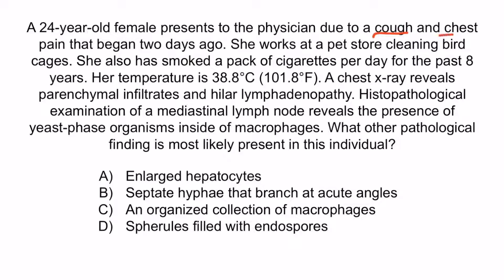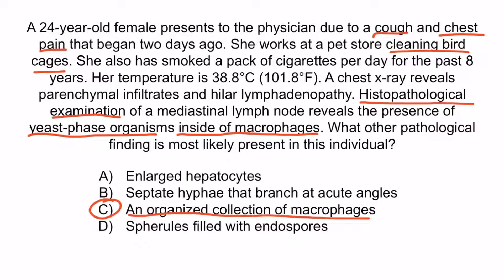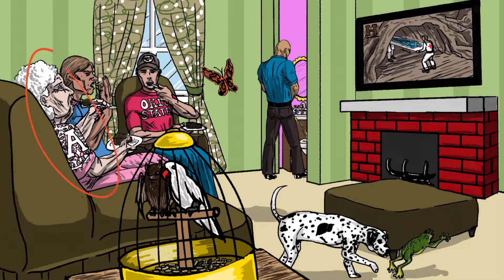Let's go through the key points. This patient has a cough and chest pain, which is suggestive of pneumonia. She cleans bird cages, and droppings from birds are a common mode of histoplasma transmission. Histopathological examination has revealed yeast phase organisms inside macrophages — a pathological finding unique to histoplasma. So the correct answer is C: an organized collection of macrophages. This is the definition of a granuloma, and recall that granuloma formation is another pathological feature of this fungus. From the image, the granny is here to help you remember that granulomas may be observed in patients infected with Histoplasma capsulatum.